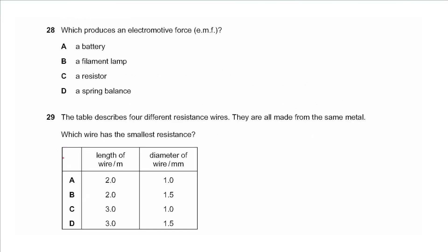Question 28 asks which produces an electromotive force: a battery, filament lamp, resistor, or spring balance. Electromotive force is the voltage of a power supply, so a battery is the correct choice — choose A.